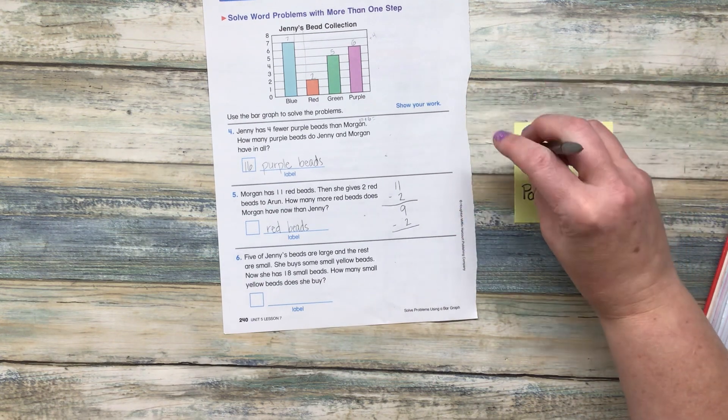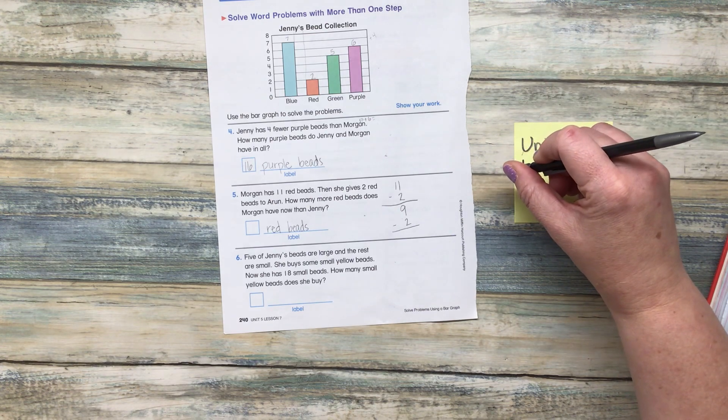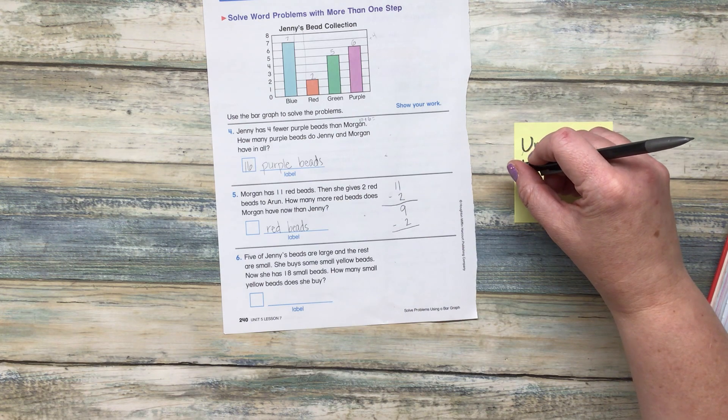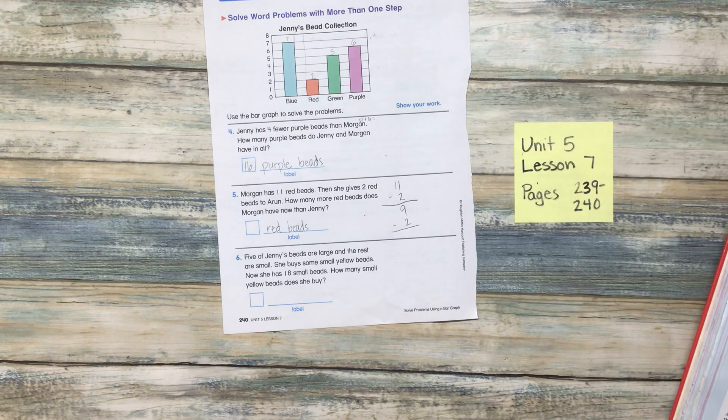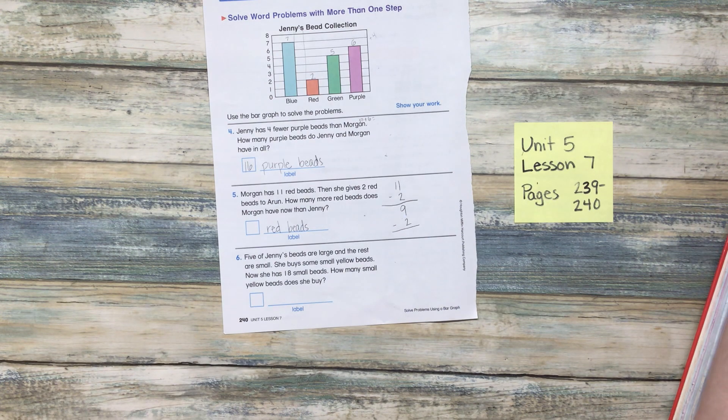Five of Jenny's beads are large and the rest are small. She buys some small yellow beads. Now she has 18 small beads. How many small beads does she buy? All right. How are we going to figure out how many of her beads are large and small? What do we need to do first?